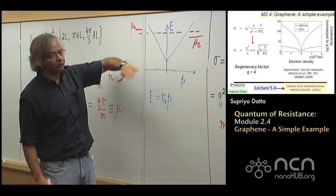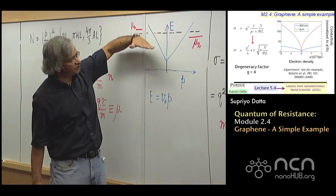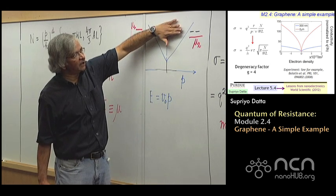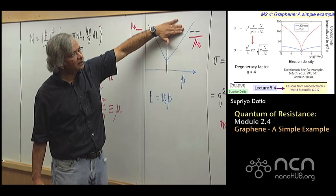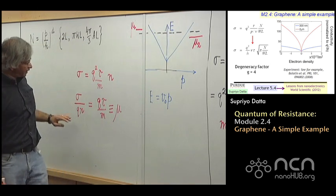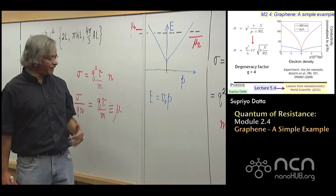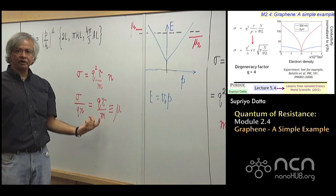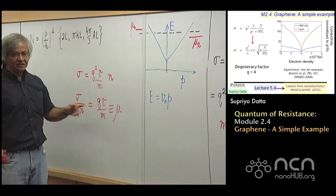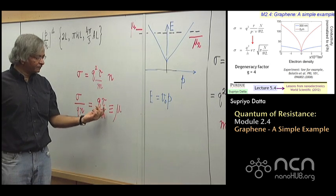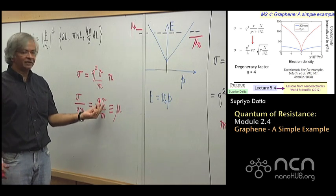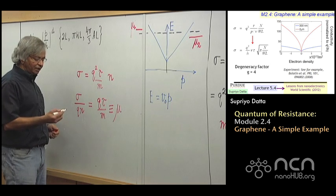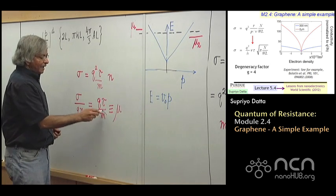And in solids in general, you could have more complicated energy momentum relations. But the point is if it was not parabolic then you see this mass should be used with caution in the sense that the mass actually is not a constant. And in graphene especially, as we'll see, the mass keeps increasing as you go up in energy. What that means is that if you did an experiment where you gradually change this electrochemical potential, so at first you are here and you have a certain number of electrons and you keep raising it, and as you raise it you have more and more electrons, and you might think, if I now take the conductivity and divide it by the electron density, that should give me the mobility.